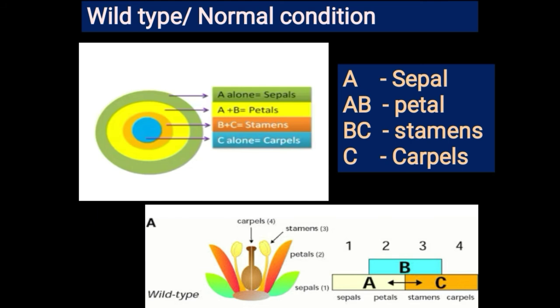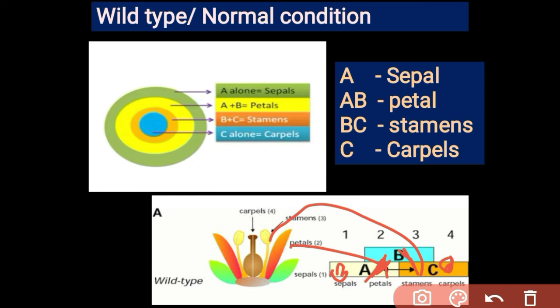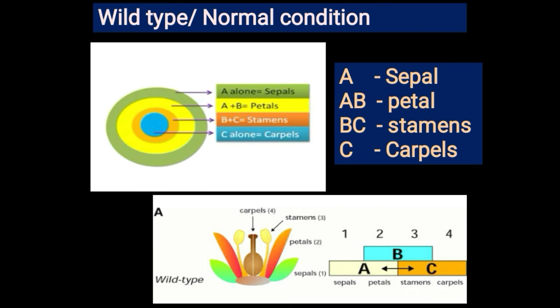In the normal or wild-type condition: A gene alone is responsible for formation of sepals; A plus B gene together are responsible for formation of petals; B plus C gene is responsible for formation of stamens; and C gene alone is responsible for formation of carpels. You can remember this in sequence: A → sepals, A+B → petals, B+C → stamens, C → carpels.